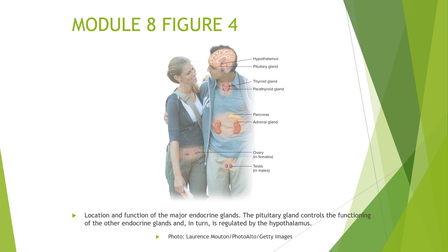Figure four, on page 68 in your textbook, shows the location and function of the major endocrine glands. The pituitary gland controls the functioning of the other endocrine glands and is in turn regulated by the hypothalamus. You can see the hypothalamus and pituitary gland in the brain. Also part of the endocrine system are the thyroid gland and parathyroid gland in the neck and throat region, the pancreas, the adrenal glands, and in females the ovaries and in males the testes — all glands that are part of the endocrine system.